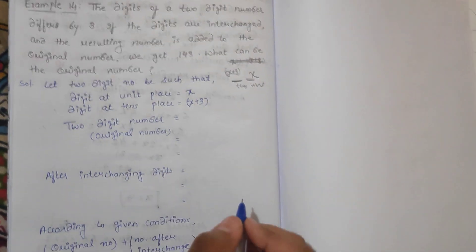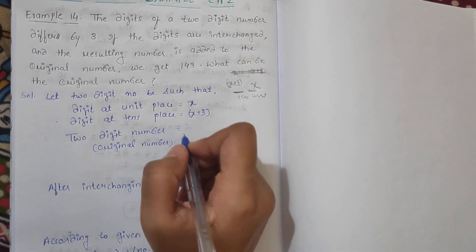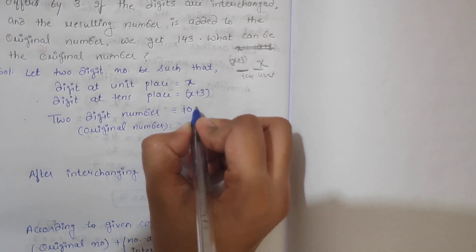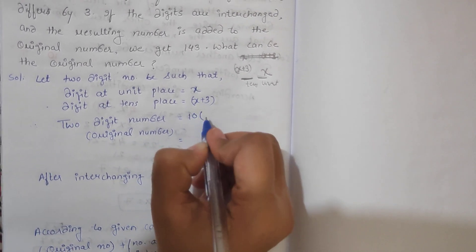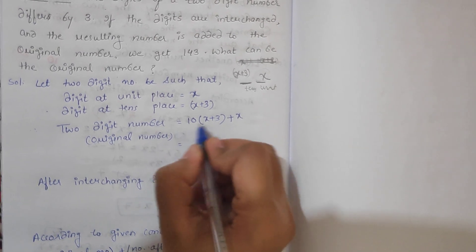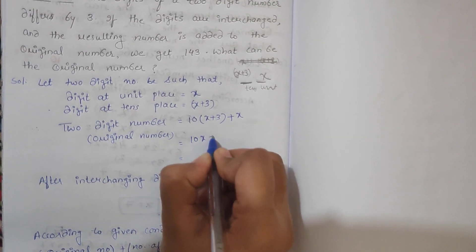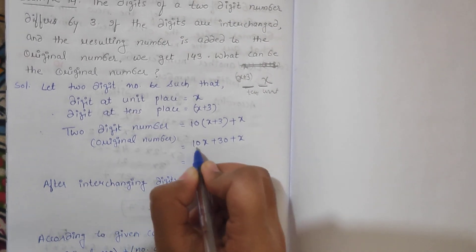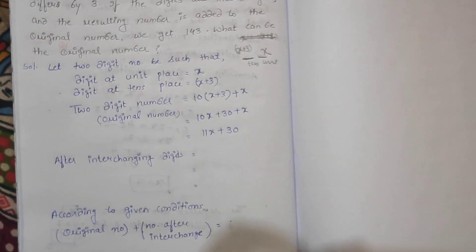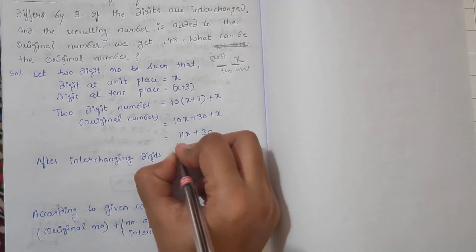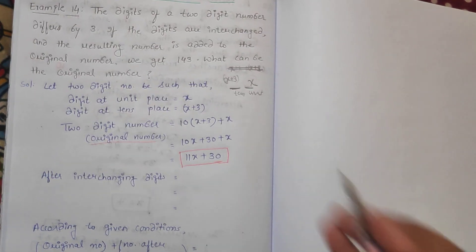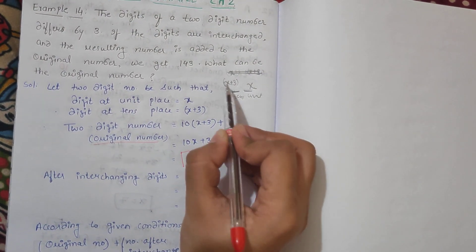Now the two digit number written in expanded form is: 10 into (x plus 3) plus x. Opening the bracket gives 10x plus 30 plus x, which equals 11x plus 30. So the original number is 11x plus 30, where the digit at unit place is x and the digit at tens place is x plus 3.